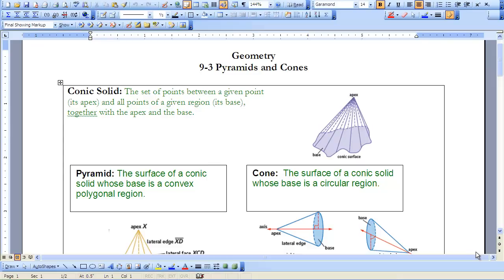A conic solid is the set of points between a given point, we'll call that the apex, and all the points of a given region, its base, together with the apex and the base.